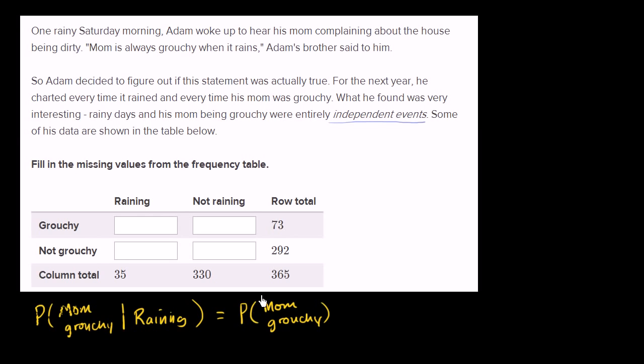So what does that tell us? Well, we can figure out the probability that mom is grouchy in general. She's grouchy 73 out of 365 days.